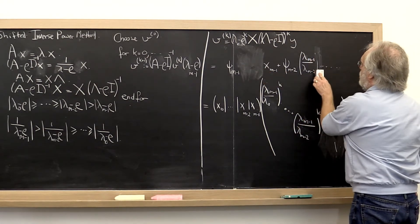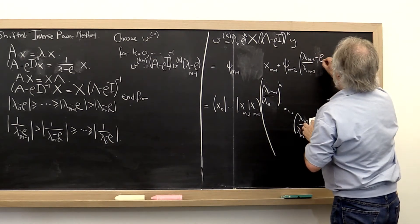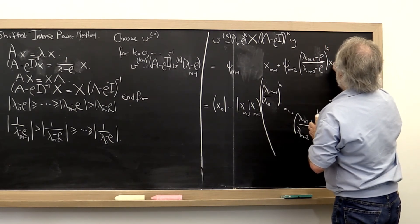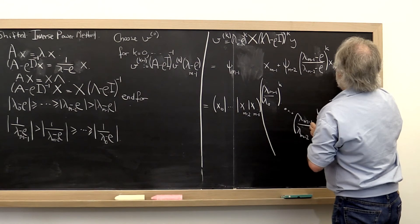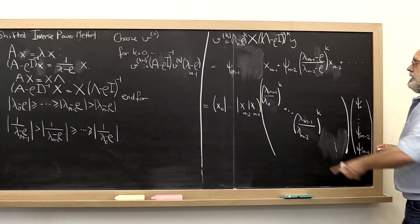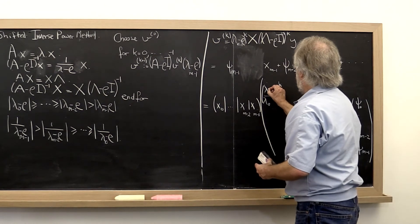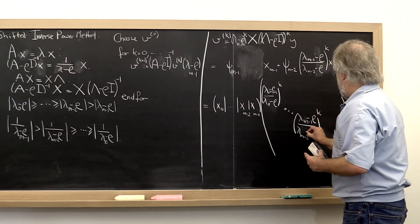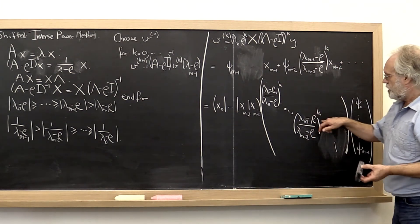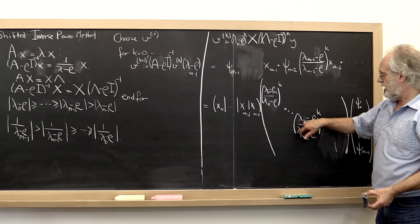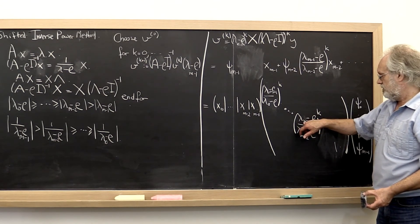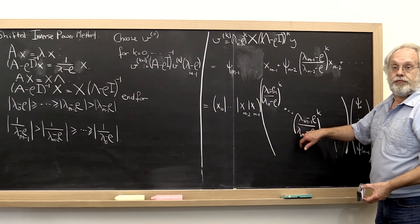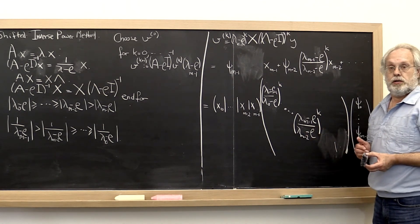But this one right here would be replaced by lambda m minus 2 minus rho over lambda m minus 1 minus rho to the kth power times x m minus 2, and then the rest of them. And right here, each of these would be replaced by lambda i minus rho over lambda m minus 1 minus rho. And the important thing here is if rho is very close to lambda m minus 1, then this ratio here becomes much more favorable, and therefore we expect to get to our result much faster.